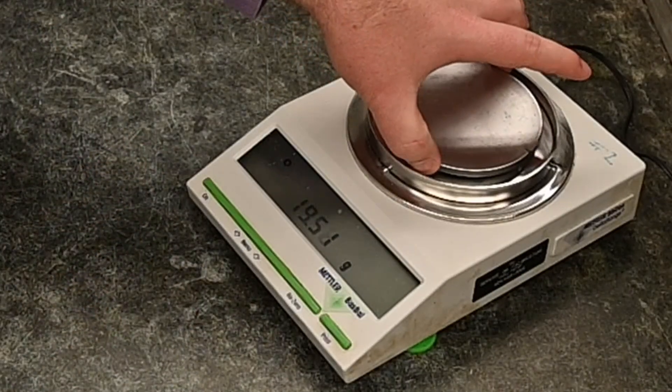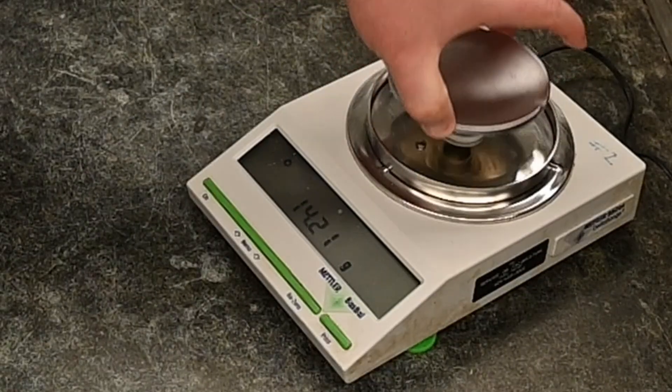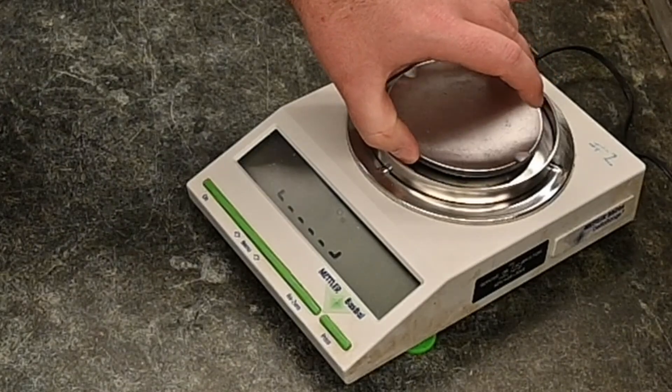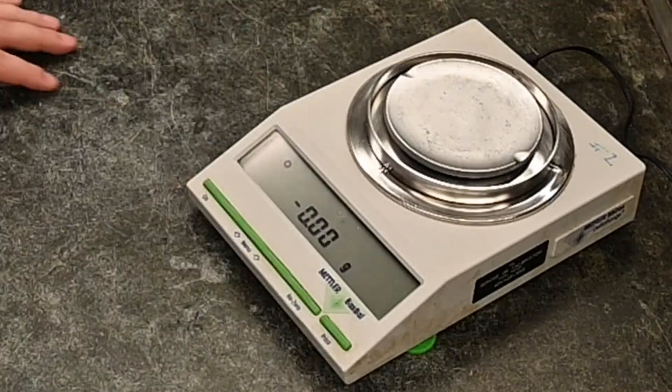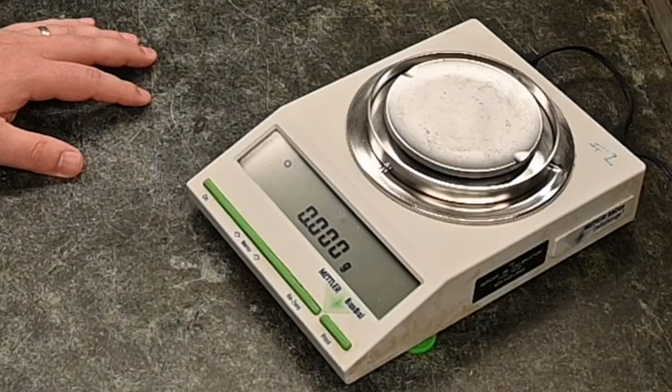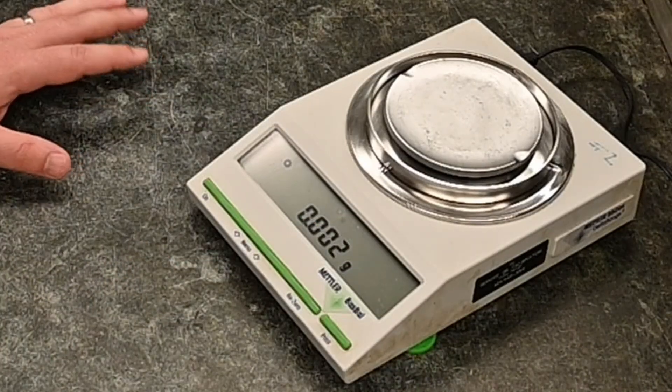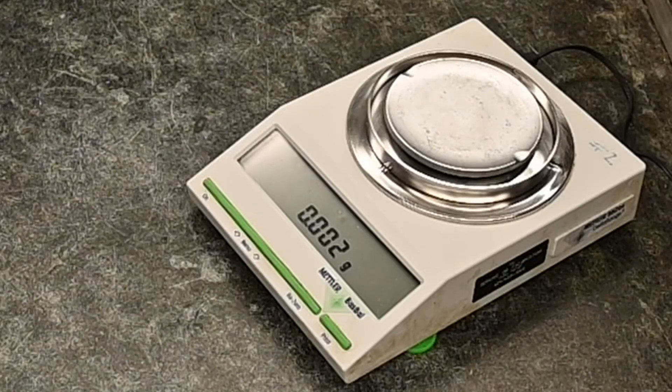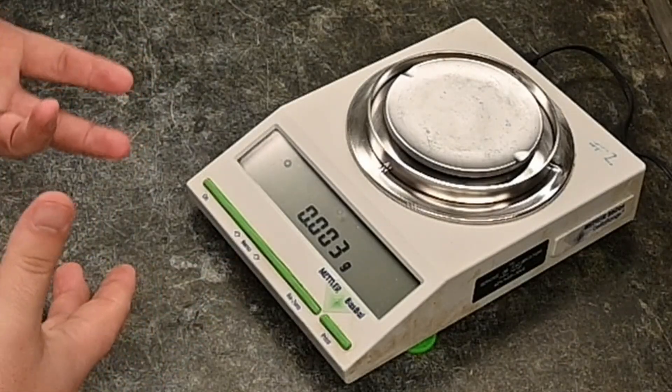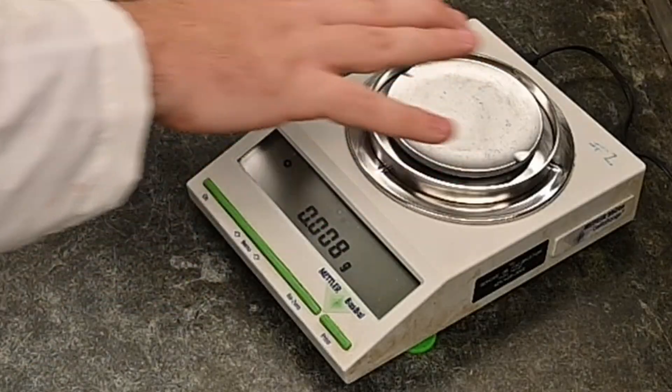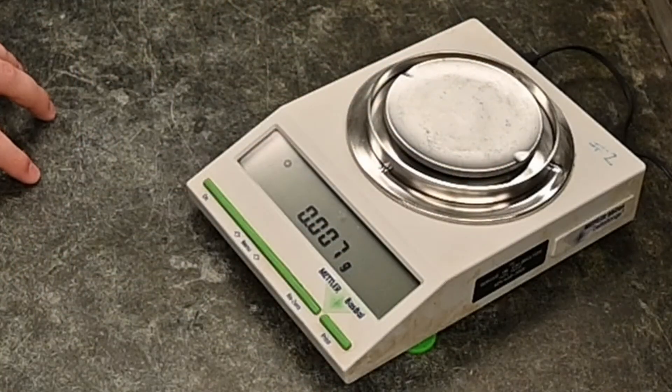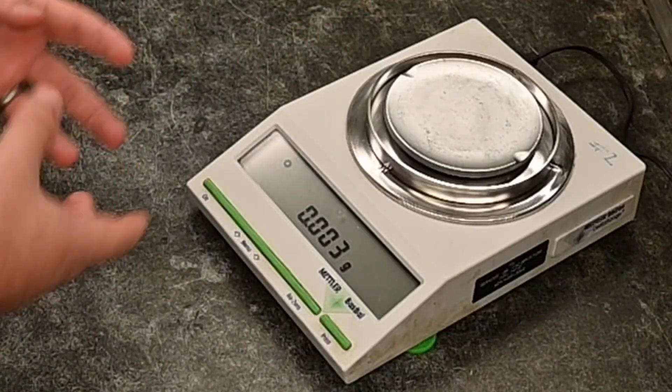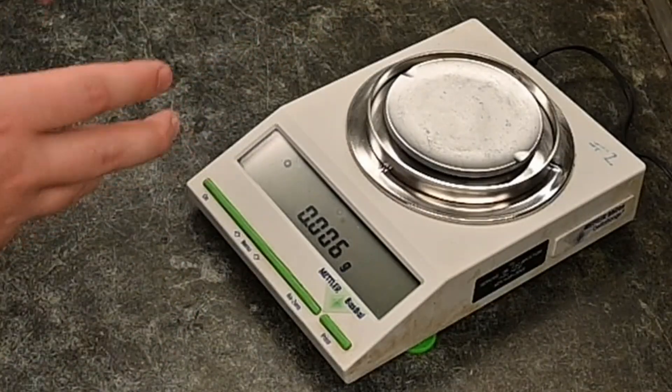You'll notice that they usually have these plates on the top. Just make sure that they are on securely and flush before you begin. One thing that I was taught, and it just depends on the type of balance, is that you don't want to put anything on there that's too hot. And I know for mine, there's actually a few more plastic pieces. So the idea is if you place something really hot on there, the heat can transfer through the metal into the plastic and can kind of warp things.